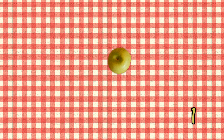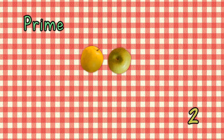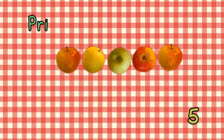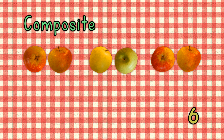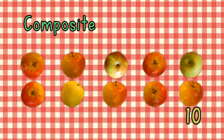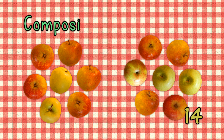Examples from 1 to 14 apples: 1 is not prime or composite. 2 is prime. 3 is prime. 4 is composite. 5 is prime. 6 is composite. 7 is prime. 8 is composite. 9 is prime. 10 is composite. 11 is prime. 12 is composite. 13 is prime. 14 is composite. So when there are more factors other than 1 or the number itself, the number is composite.